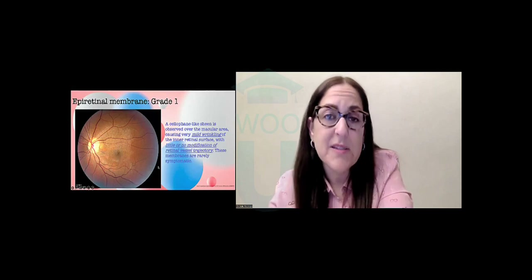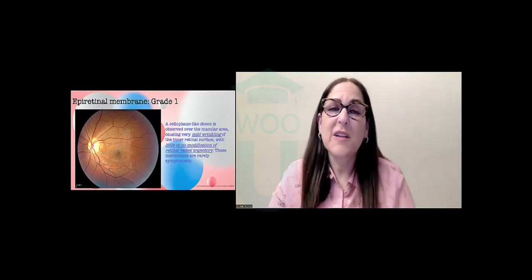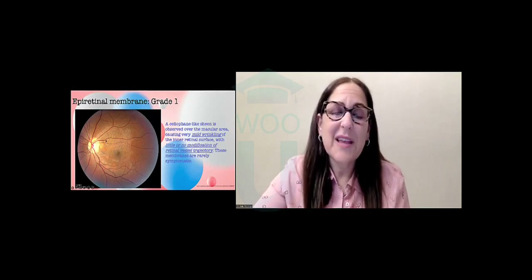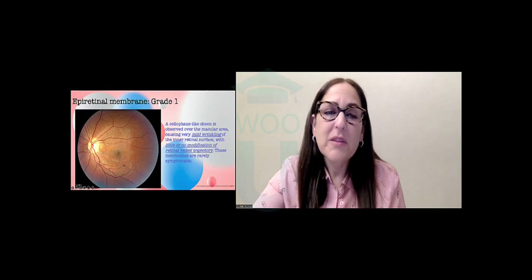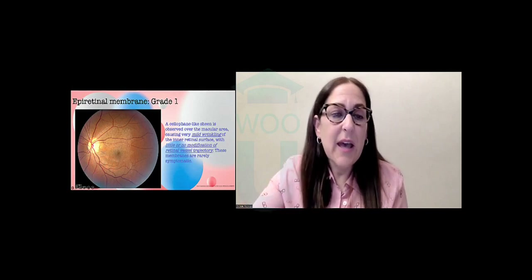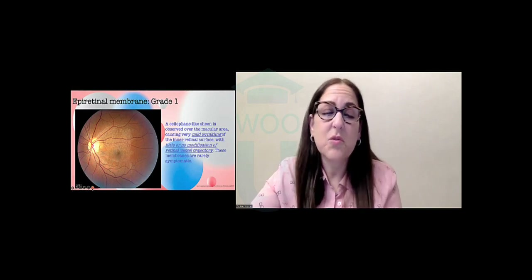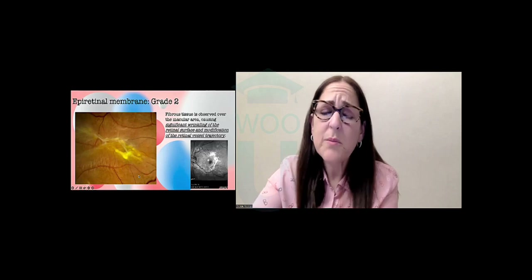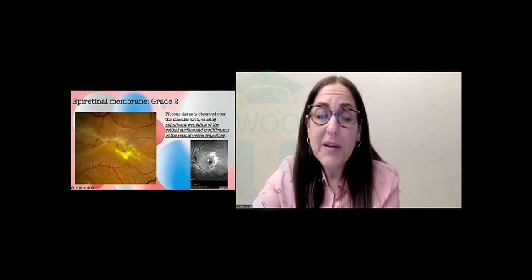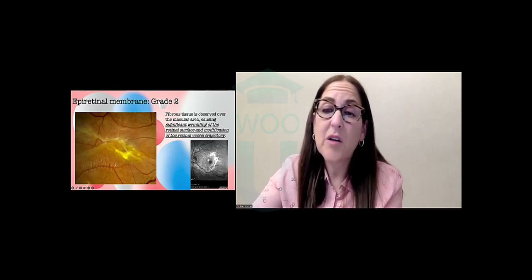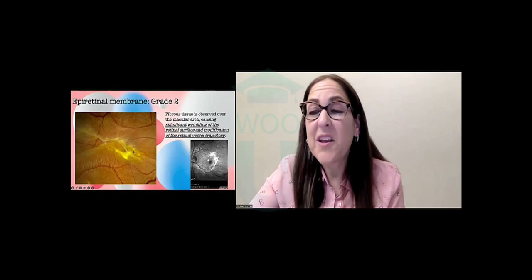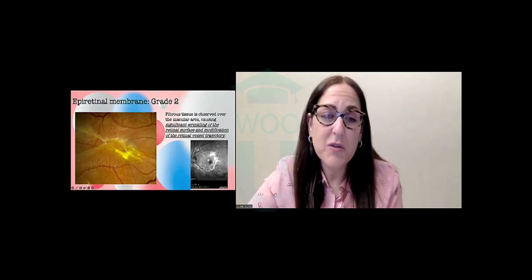There are two types of epiretinal membranes: grade one and grade two, correlating with severity. A grade one ERM is where you can see this cellophane-like tissue hovering in the posterior pole, but the blood vessels in the surrounding area look fairly normal aside from that cellophane-like appearance. A grade two ERM shows a lot more fibrosis and traction. When the vessels change trajectory — what we call a grade two epiretinal membrane — obviously grade two doesn't have as good a visual prognosis as type one.